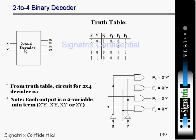Now, a 2-to-4 binary decoder: there are 2 inputs x and y, and 2 raised to power 2 means 4 outputs. So f0, f1, f2, and f3 are the 4 outputs. When x and y are both 0 and f0 is selected, you are enabling the f0 output. When x and y is 0,0 you are enabling the f1 output.